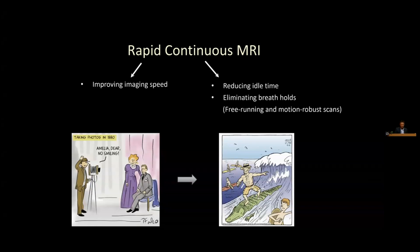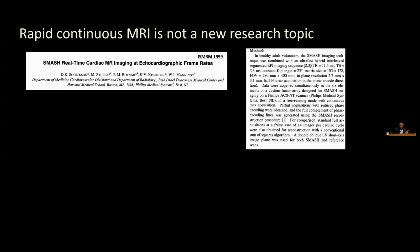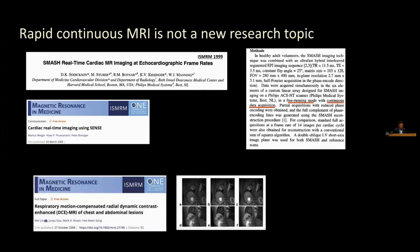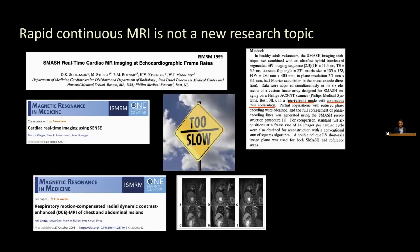Rapid continuous MR is not a new research topic. I want to highlight one abstract relevant to n-ways, presented by Dan in 1999. As a concept, the free-running model of continuous data acquisition has been around for a while. We also have some early work using parallel imaging to accelerate cardiac MR. Improving cardiovascular MR was probably one of the major motivations for the development of parallel imaging. In the early days, there was also work on continuous free-breathing DCE MR of the liver, so that we don't need a breath hold or separate acquisitions — a push-button acquisition.